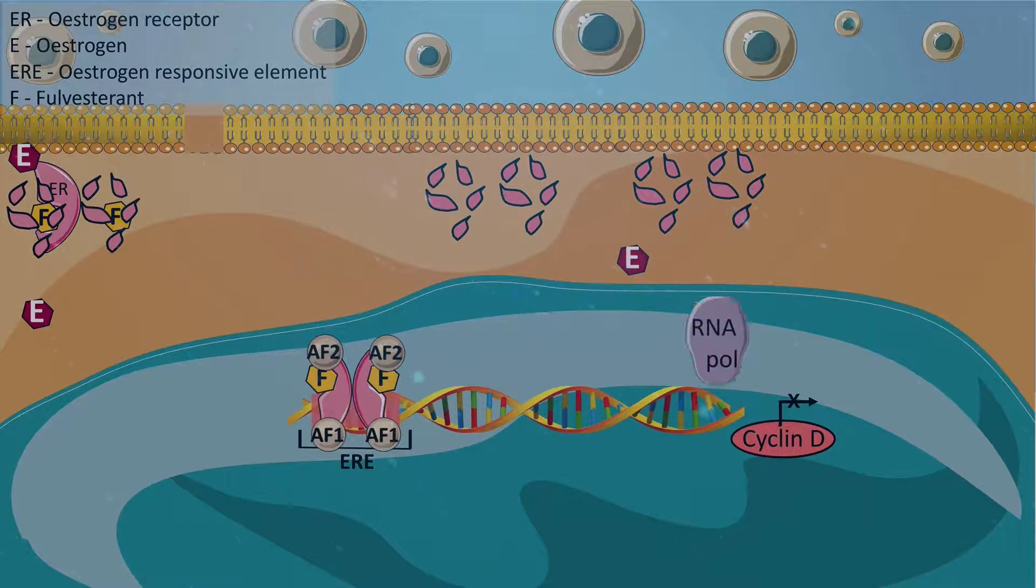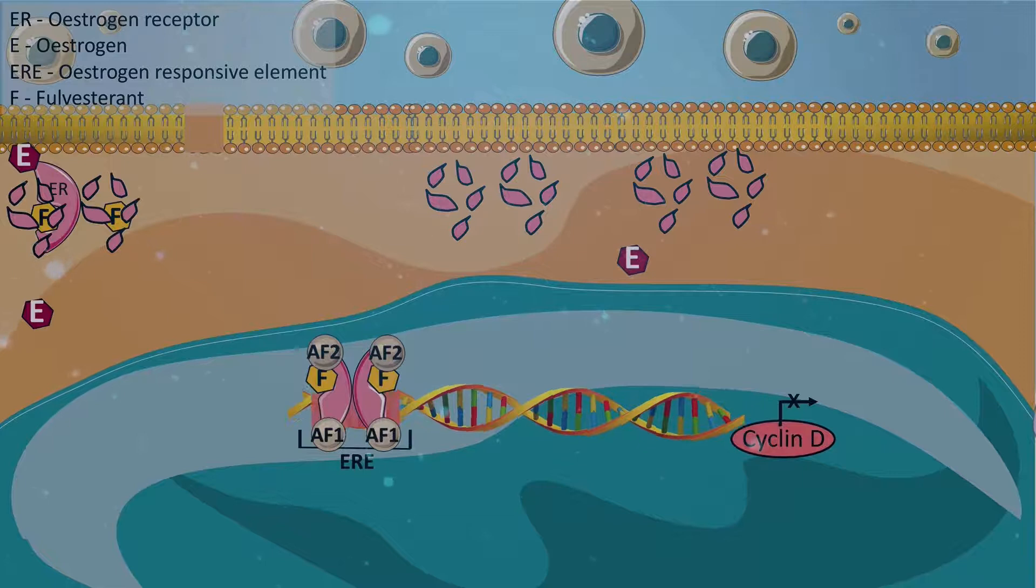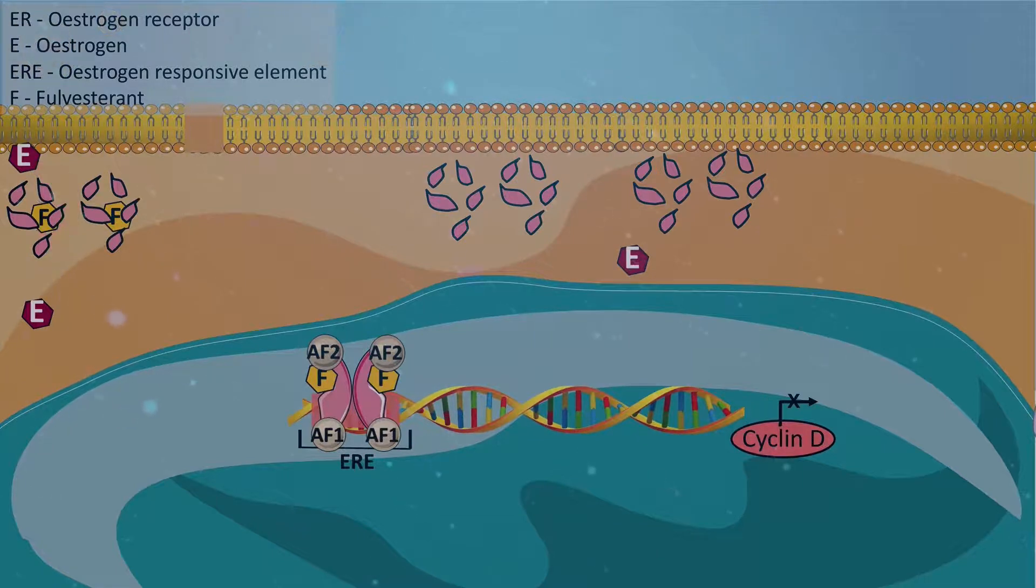While some dimers are recruited to the estrogen-responsive element of the DNA, no coactivators are recruited, and thus no transcription of the estrogen-responsive genes occurs.